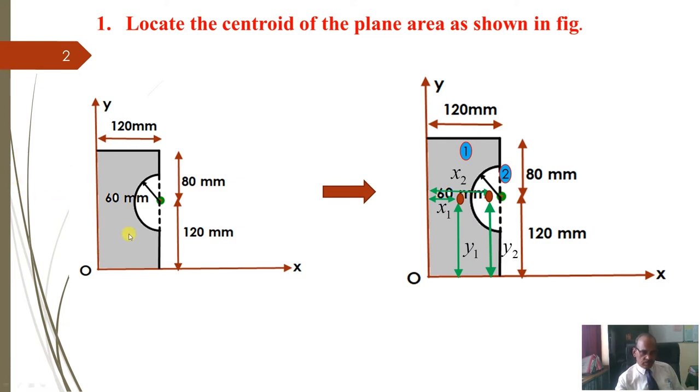So how we will break this? First, what we will do, we will take the total area, rectangle and then we can take this area as a minus. So I will call this is a 1 and this is part 2.